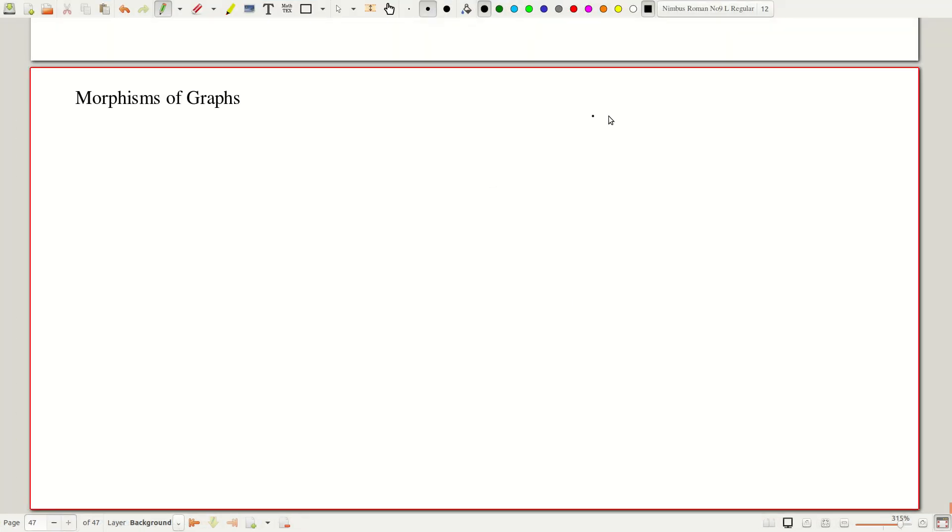Okay, so we will now turn to morphisms of graphs. This is a more or less obvious definition in maps between graphs except I should clarify here we do not allow edges to be collapsed.